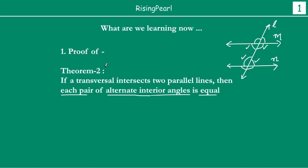We are calling this Theorem 2 because in this series we have already proved Theorem 1, where we talked about vertically opposite angles being equal. So this is our second theorem. Now that we know the background, let us find out how we can prove it.